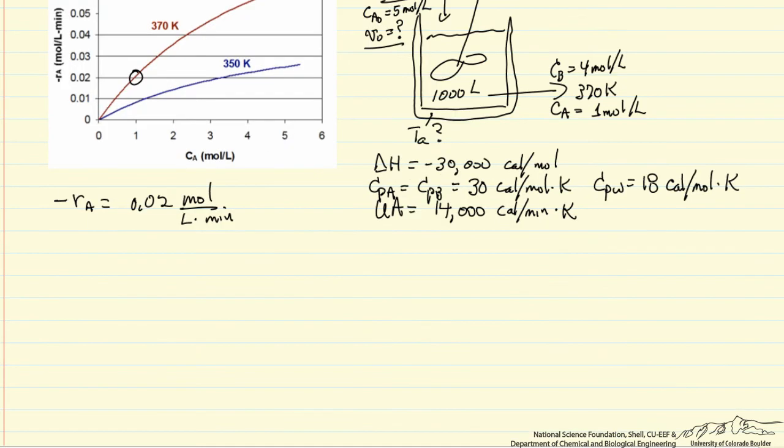So I'm going to calculate first the volumetric flow rate, and we're going to do that by using a material balance. And we'll do a balance on the reactant A, it's at steady state, there's no accumulation.